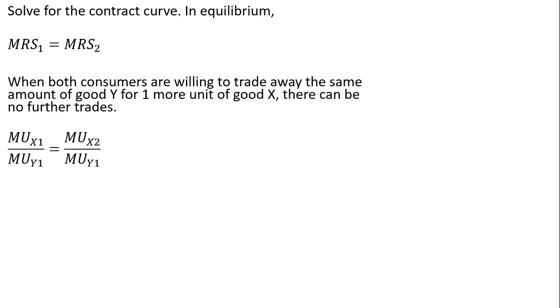So what is the marginal rate of substitution for consumer 1? It's consumer 1's marginal utility of good x divided by the marginal utility of good y. And similarly for consumer 2, the marginal rate of substitution for consumer 2 is marginal utility of good x divided by the marginal utility of good y. Those marginal utilities were given on the first screen, and so just substituting in those results, we get this.